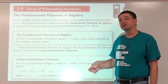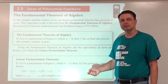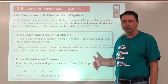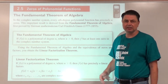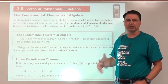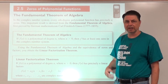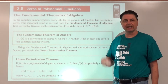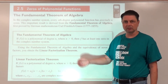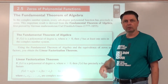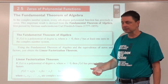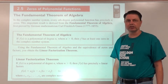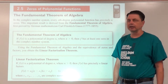Now some of them might be repeats, so they're not all necessarily going to be distinct. If two was a zero twice, we don't say x equals two, x equals two — just list it once. But that's what the linear factorization theorem is saying.